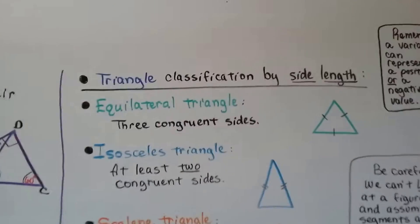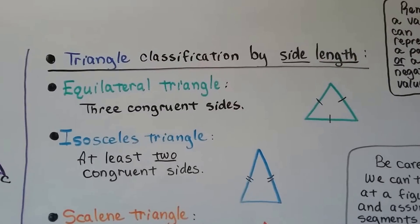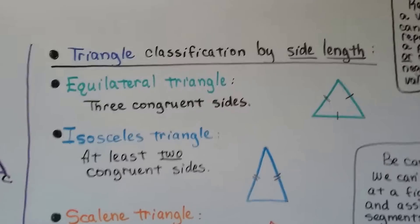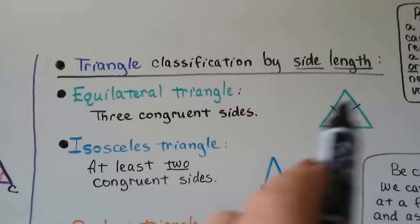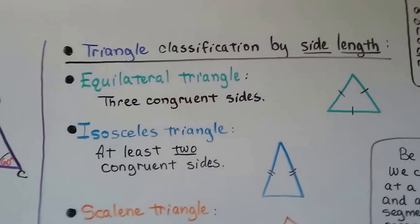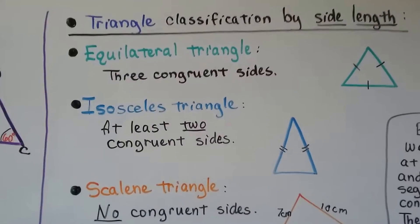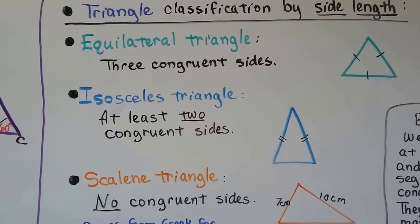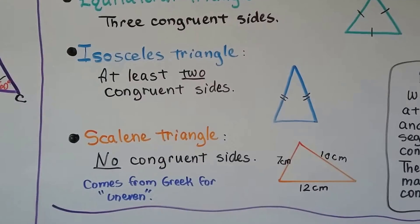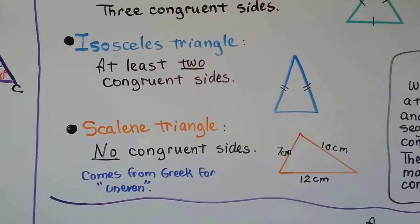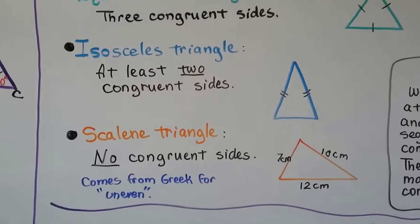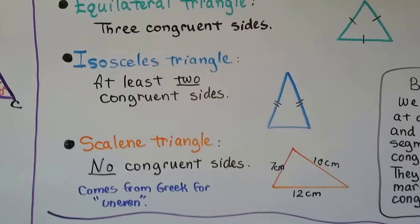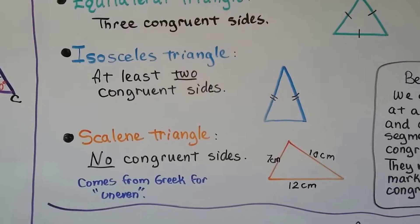Now here's triangle classification by side length. We have an equilateral triangle with three congruent sides — you can see the congruent marks on each side. An isosceles triangle has at least two congruent sides. Then we have a scalene triangle that has no congruent sides — that comes from Greek for uneven. It has a 7 cm side, a 10 cm side, and a 12 cm side; they're all different, so that's scalene.